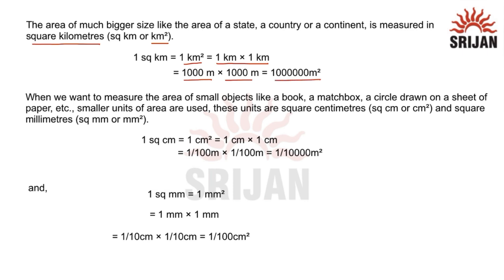When we want to measure the area of smaller objects like a book or a matchbox, smaller units are used — centimeter square or millimeter square. One centimeter square equals 1 centimeter multiplied by 1 centimeter, which equals 1 upon 100 meters multiplied by 1 upon 100 meters.